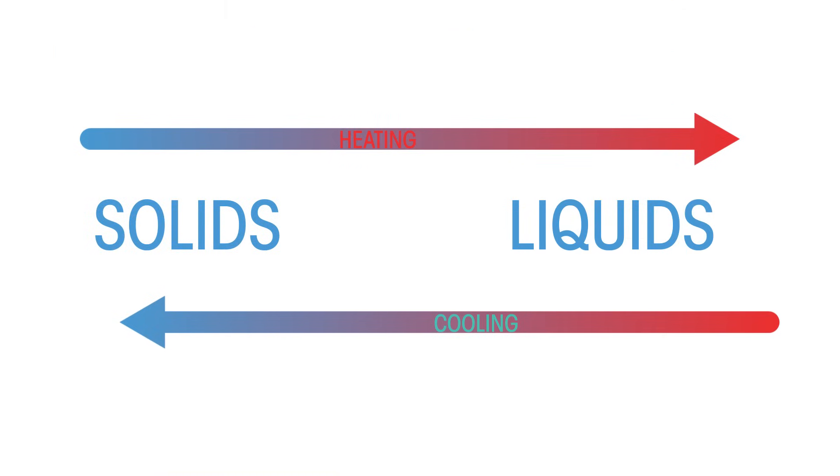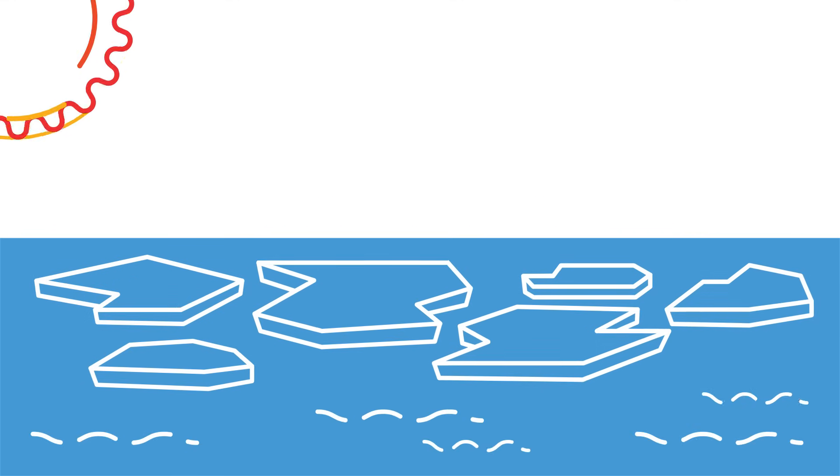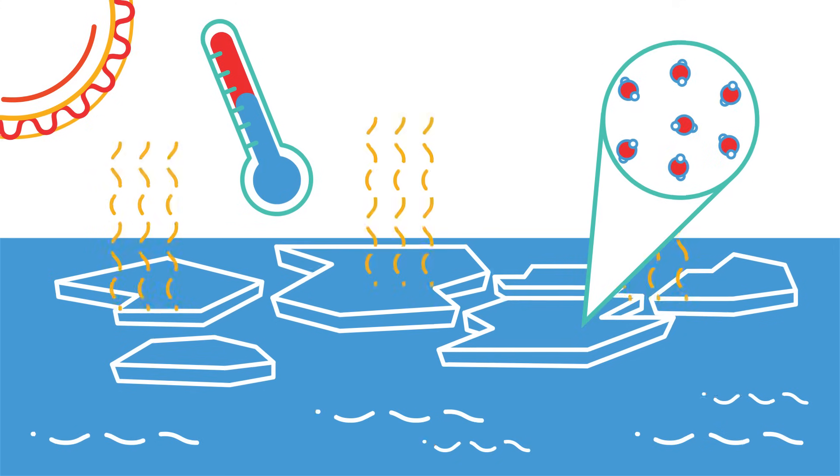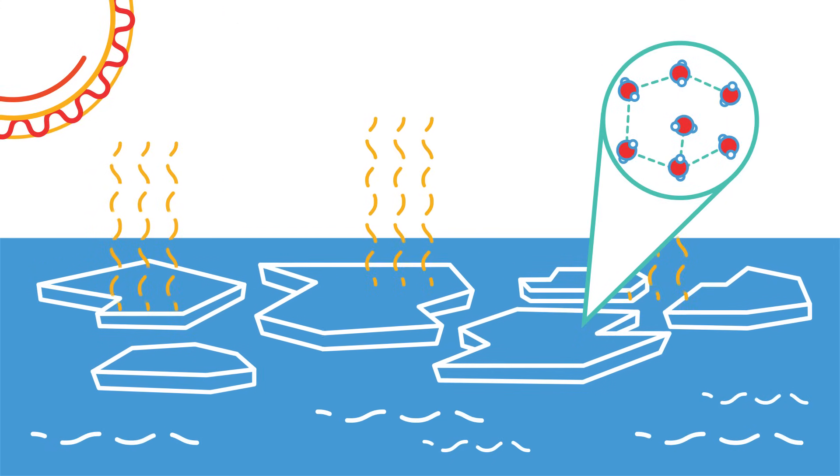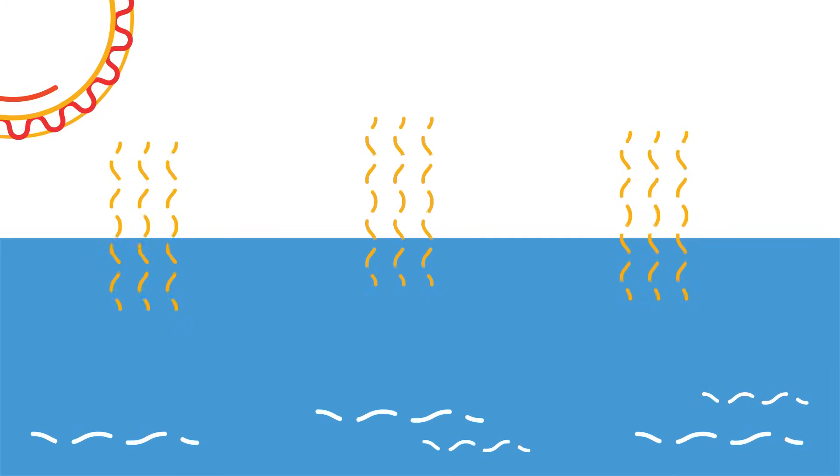Now let's think about the transitions between solids and liquids – so melting and freezing. Think of the Arctic sea ice. In the summer, when air temperatures are warmer, more heat energy is absorbed by the ice. This causes bonds to break between the ice's water molecules, and the ice starts to melt. The solid ice becomes liquid water.